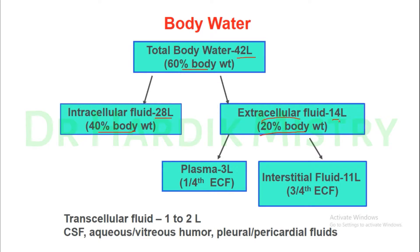Within the 14 liters of extracellular fluid, we include 3 liters of plasma, which is one-fourth of the ECF, and 11 liters of interstitial fluid, which is three-fourths of the ECF. The transcellular fluid is around 1 to 2 liters and covers CSF (cerebrospinal fluid), aqueous and vitreous humor, and pleural and pericardial fluids.